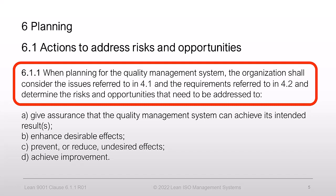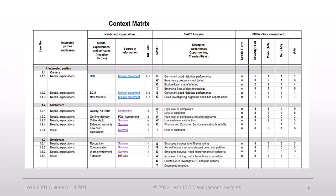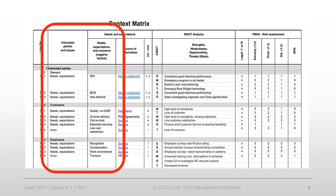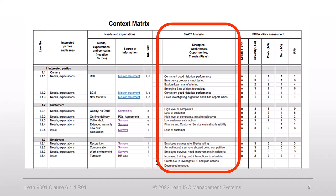In one of our previous videos on risks, we already talked about addressing these issues. Let's refresh our memories. We created a context matrix that addressed numerous requirements of the standard. The matrix included internal and external issues relevant to our QMS per element 4.1, and the needs and expectations of interested parties required by clause 4.2. Using SWOT analysis, we determined the risks and opportunities related to the identified needs.